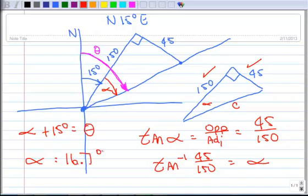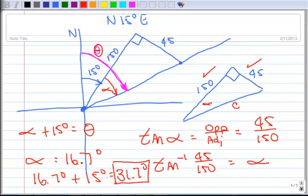So to figure out my new bearing, I have to add 15 degrees to that. So 16.7 degrees plus 15 degrees gives me 31.7 degrees. So my new bearing, right there, my theta is 31.7 degrees. And that's the end of this example.